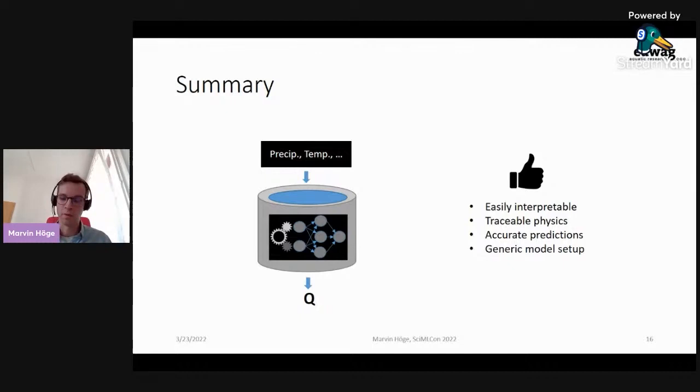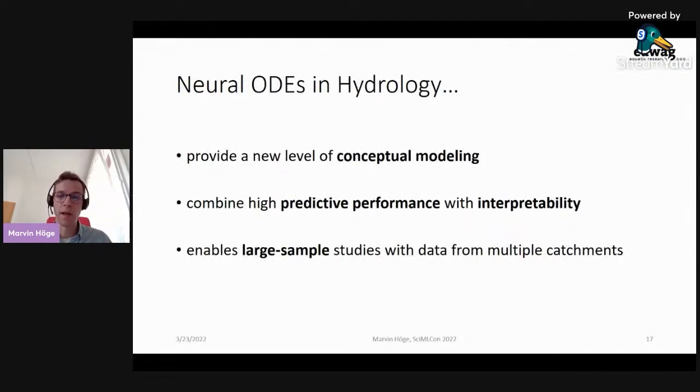So we think that the neural ODEs therefore have a high potential in hydrology. They provide a new level of conceptual modeling because processes do not have to be hard-coded, but could be learned by neural networks. Of course, they can be kept fixed if desired, and this allows all kinds of combinations of variations. Neural ODEs demonstrate high predictive performance while being interpretable. The hydrologic community has developed lots of tools to analyze individual processes for plain conceptual models, and can now apply these tools to the neural ODE approach in a very similar fashion. And finally, the generic model setup already led to good results over numerous individual catchments, but also allows us to conduct large sample studies that simultaneously include multiple catchments. This is the current trend in machine learning, and our approach could help us to find better relations than those that are known today.